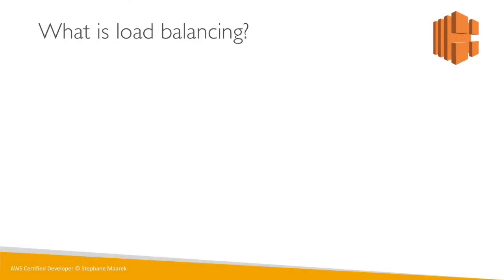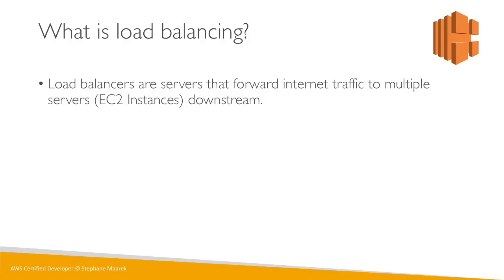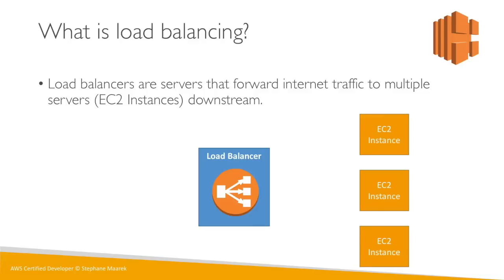Now we're going to learn about load balancing. A load balancer is a server that will front your application and forward all the internet traffic to your instances downstream. This is what it looks like: we have our EC2 instances with our application, and we have a load balancer in front of that.